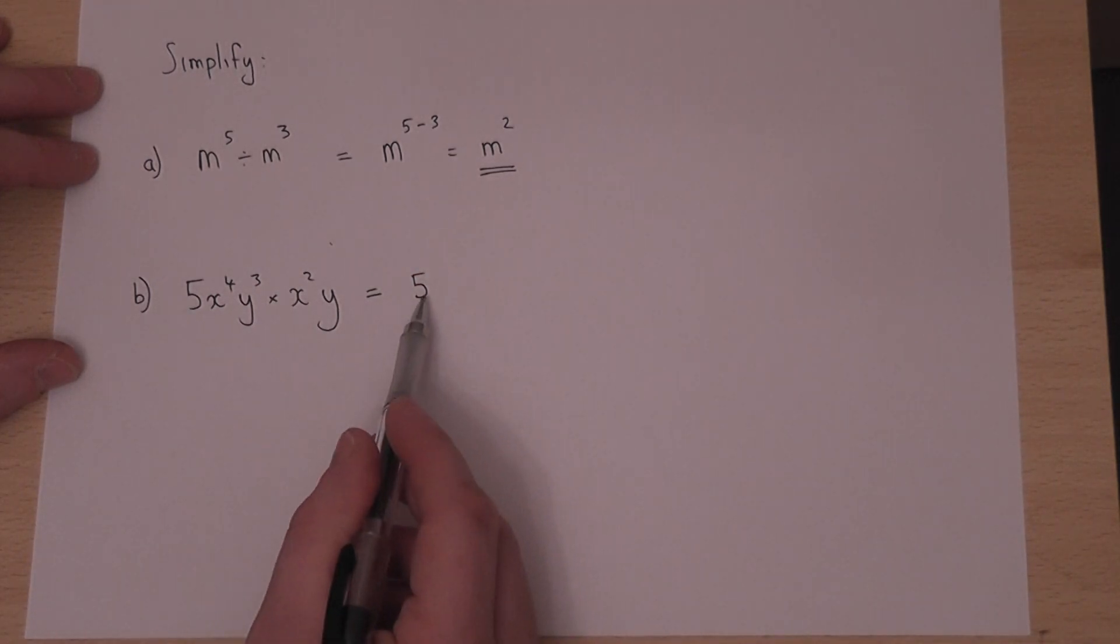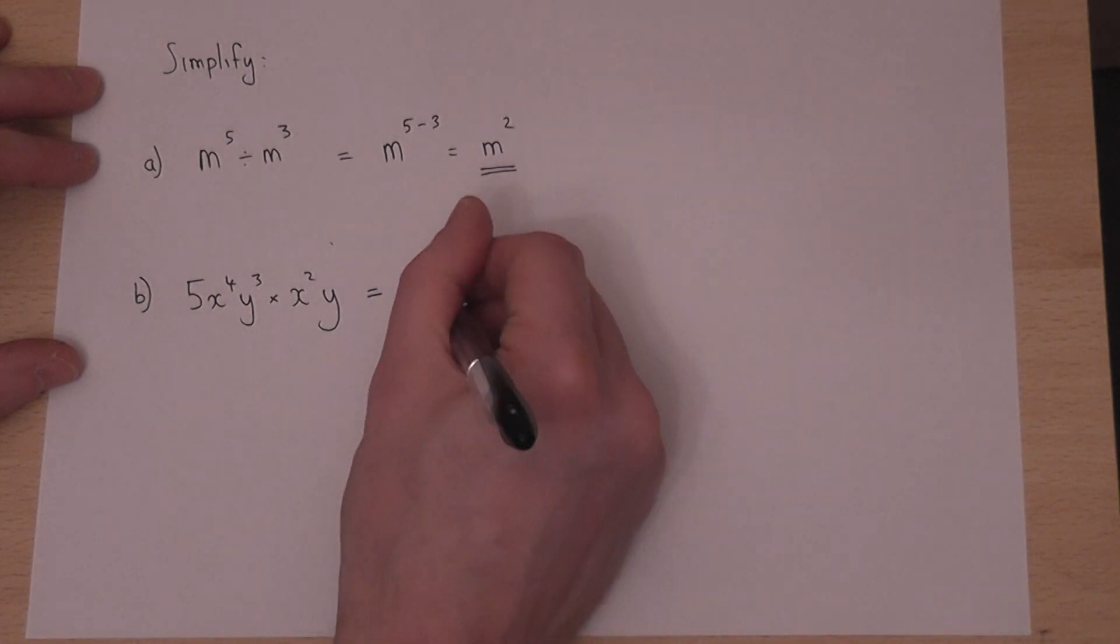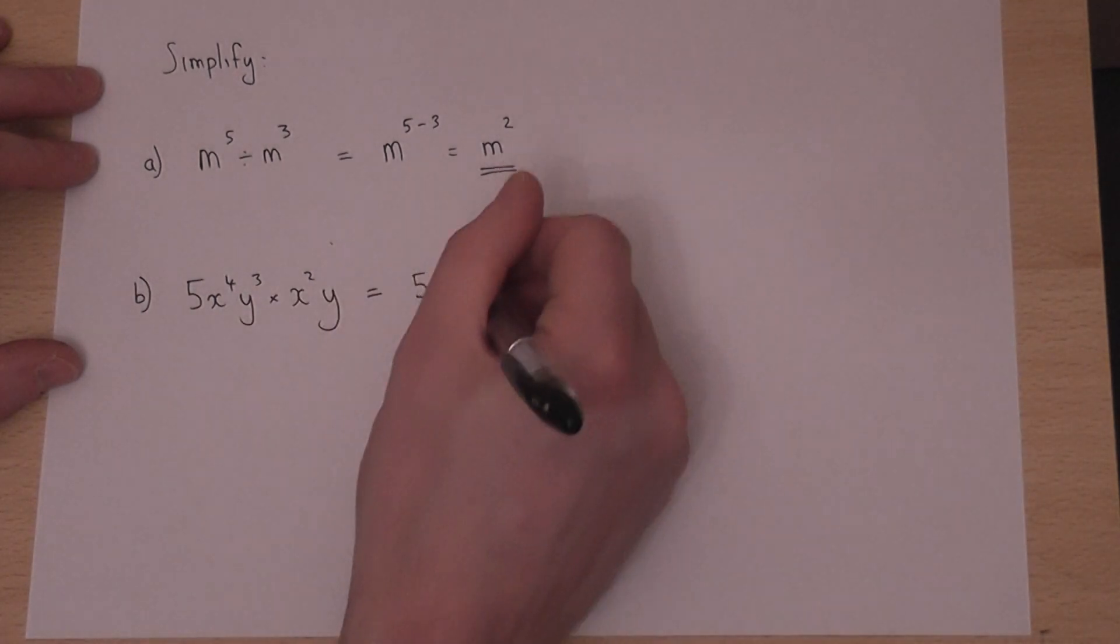and 5 times 1 is 5. For x to the power of 4 times x squared, we add the powers. When we multiply, we add. So 4 plus 2 is 6.